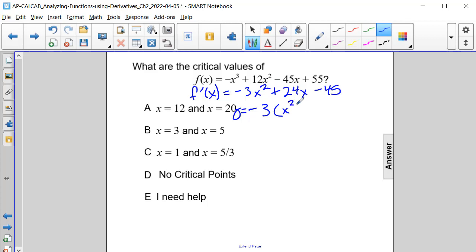So we'll have x squared left, positive 24 divided by negative 3 will be negative 8x, and then negative 45 divided by negative 3 is positive 15.